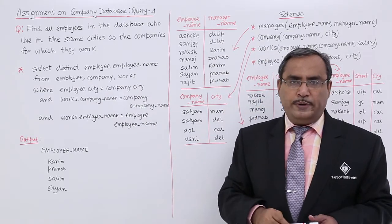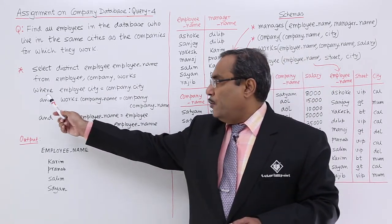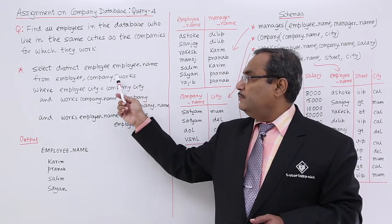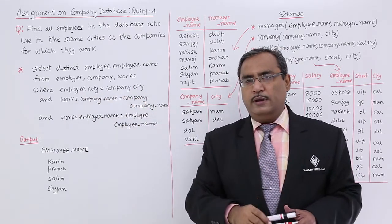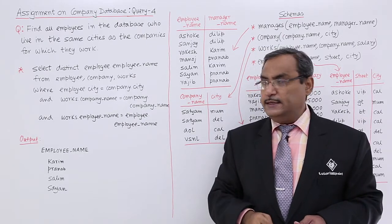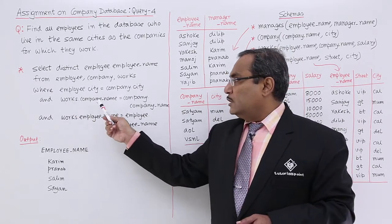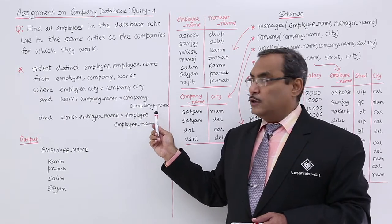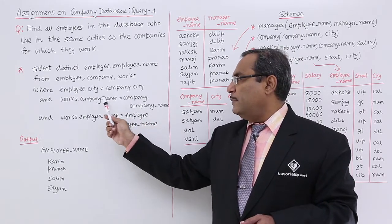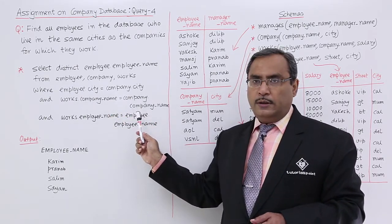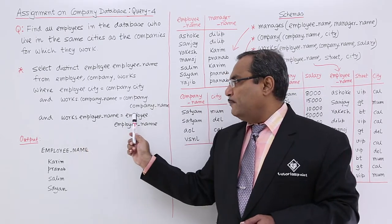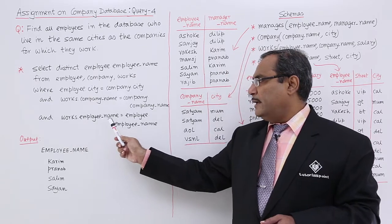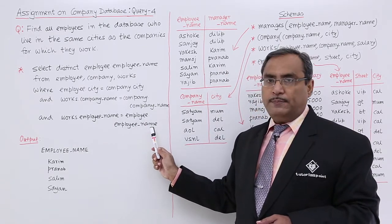Since we have taken three tables, the Cartesian product will be applied across these three. The WHERE conditions are: employee.city = company.city, because city is the common attribute between company and employee; works.company_name = company.company_name, because company_name is common between works and company; and works.employee_name = employee.employee_name.